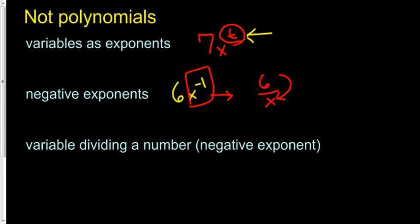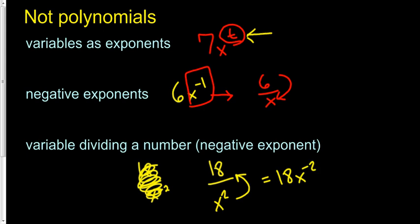What about if a variable is dividing a number? Well, that's what we've seen right here. The whole reason is that if we worked it in reverse, like 18 over x squared, we can rewrite it as 18x to the negative second, which violates the negative exponent policy. So, if you don't want to complicate it, just remember this: If you see a variable represented as an exponent, not a polynomial. If you see a number being divided by a variable, that's not a polynomial.